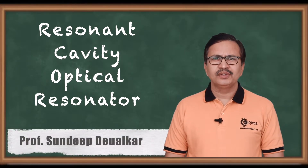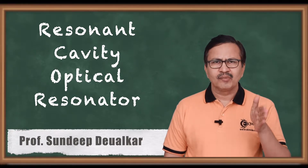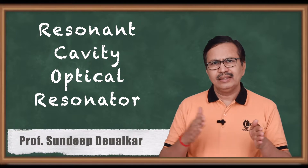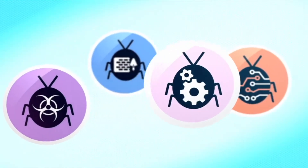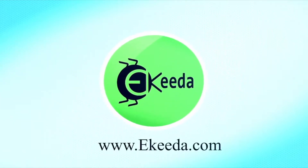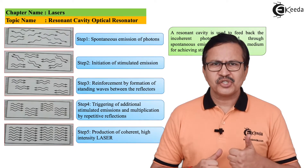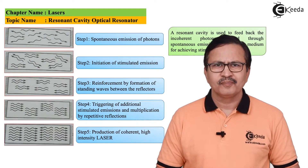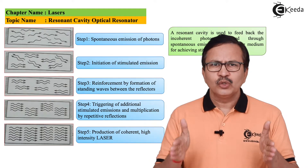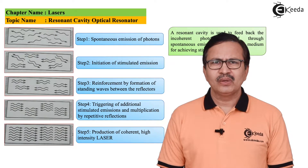Hello friends. In this video we are going to learn about an optical resonating cavity which is formed out of a mirror at one end which is 100% reflecting, and at the other end we also have a mirror that is partially reflecting. In this optical resonator, the active material — also called the lasing medium — is present between the two walls of the resonator, and we normally call it the lasing material.